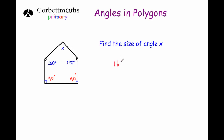So if I add up the four angles that we're given and take that away from 540 degrees, we'll find out the size of angle x. So 160 plus 120 plus 90 plus 90. Adding these four angles up, we get 460 degrees.